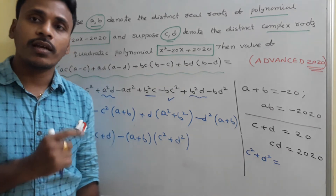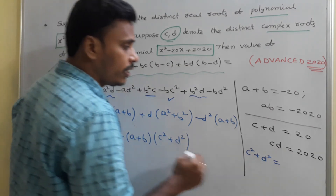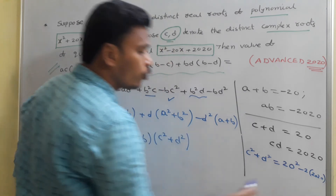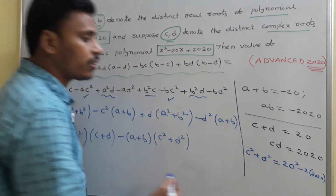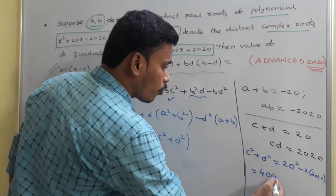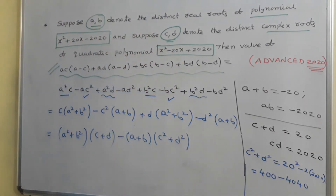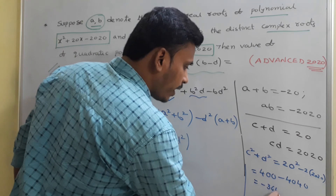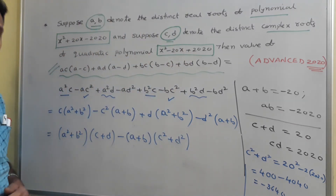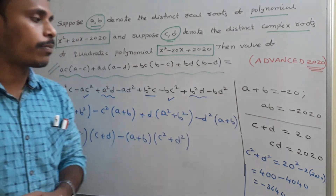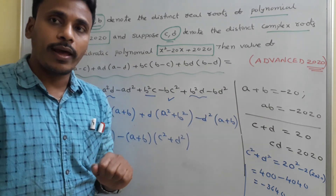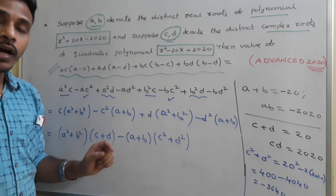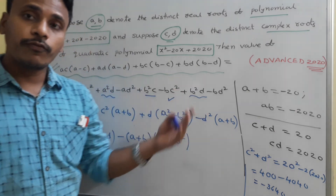c² + d² = (c + d)² − 2cd = 20² − 2(2020) = 400 − 4040 = −3640. In the same way, a² + b² = (a + b)² − 2ab = (−20)² − 2(−2020) = 400 + 4040 = 4440.